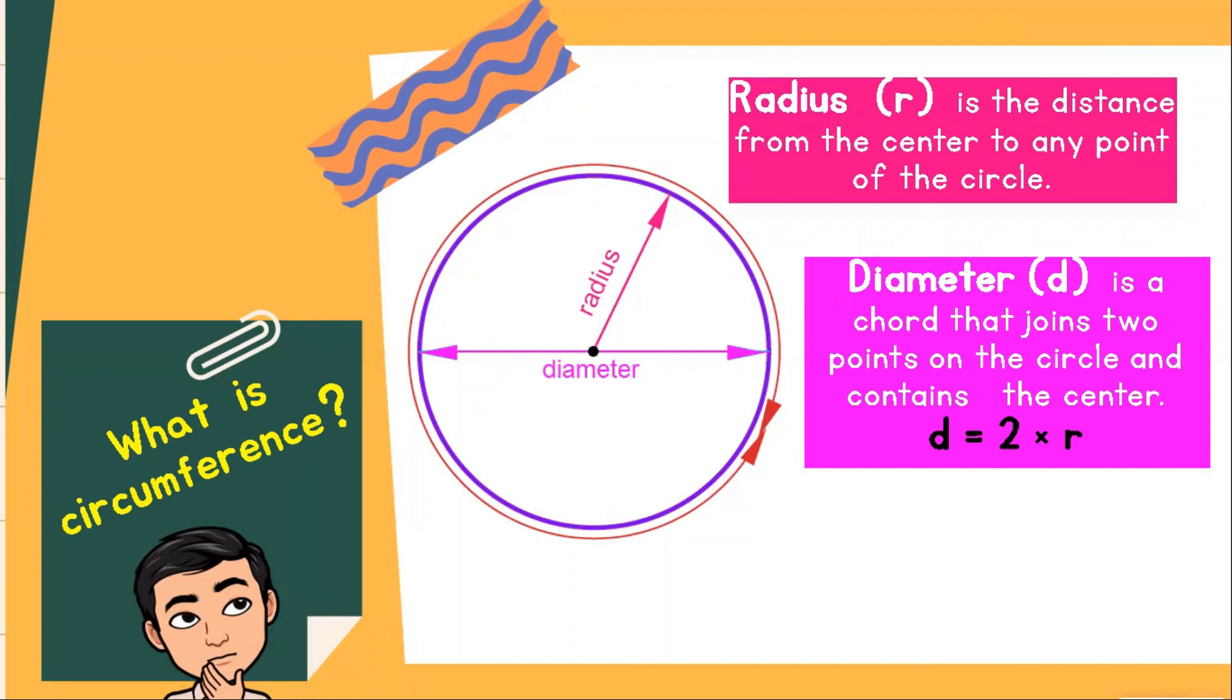The diameter is a cord that joins two points on the circle, and it contains the center. Therefore, the diameter is also equal to 2 times R, where R stands for the radius.